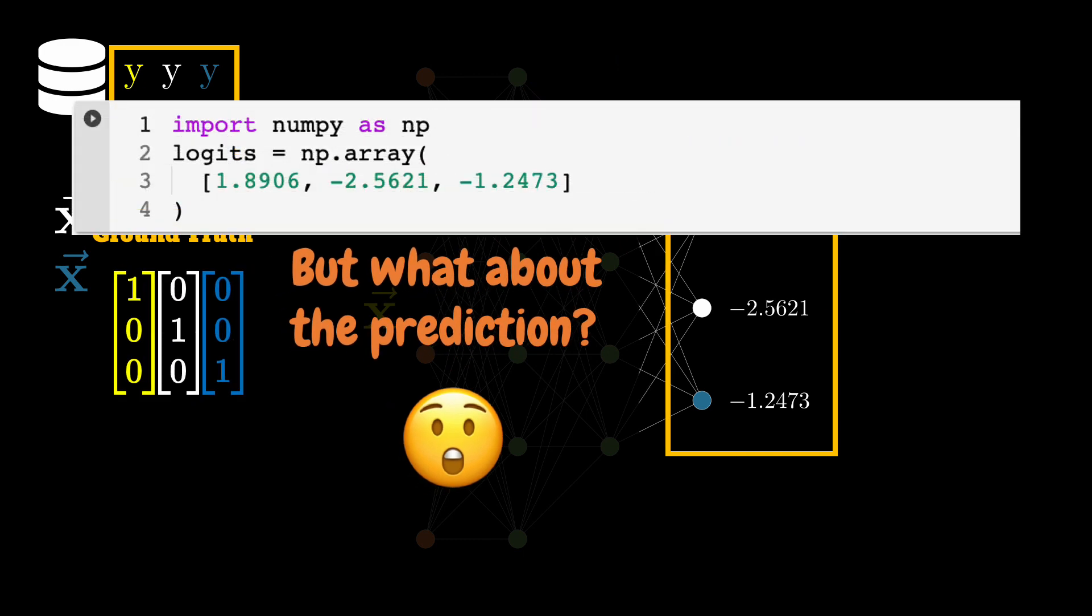So let's do that. Here I have the numpy array that has the predictions of the neural network, and clearly this array does not satisfy the requirement of being a probability distribution. All the entries in the distribution are supposed to be positive and the number between zero and one, and you can see that it is not the case here.